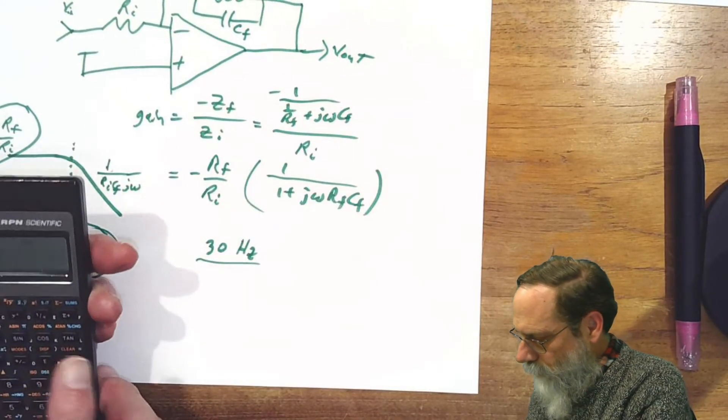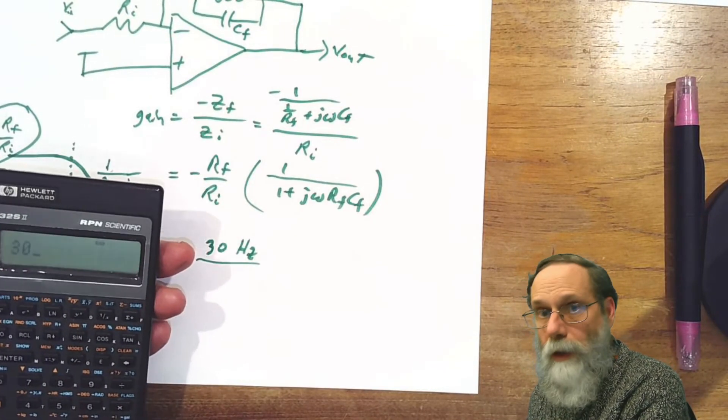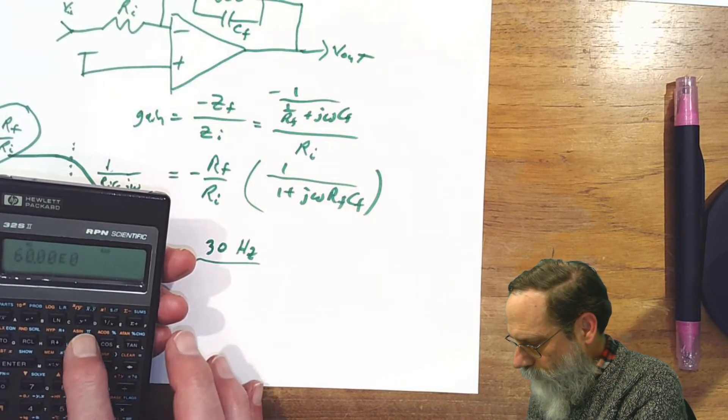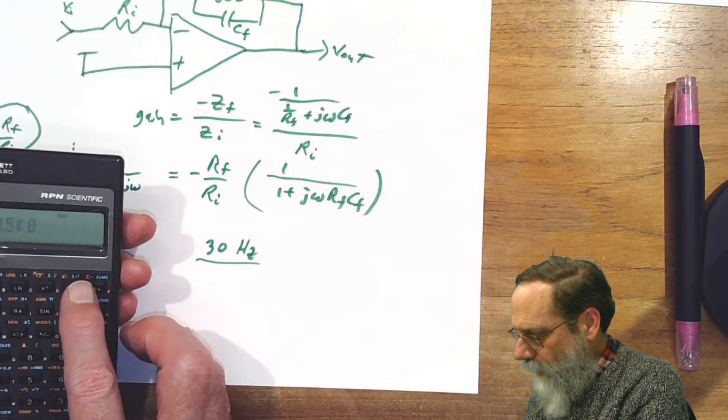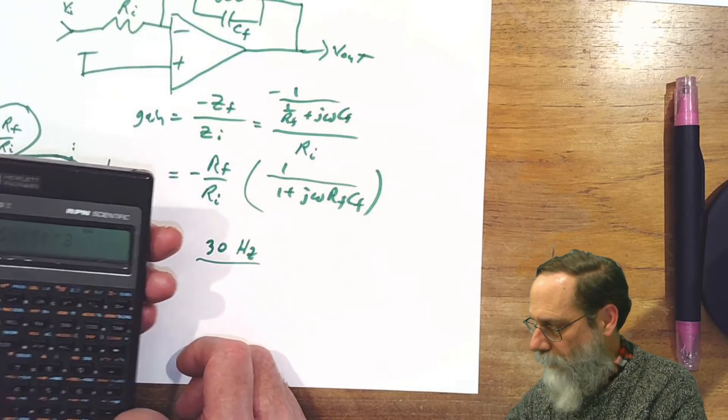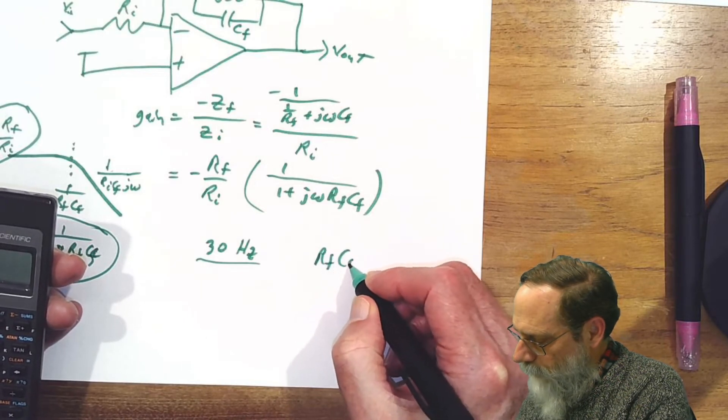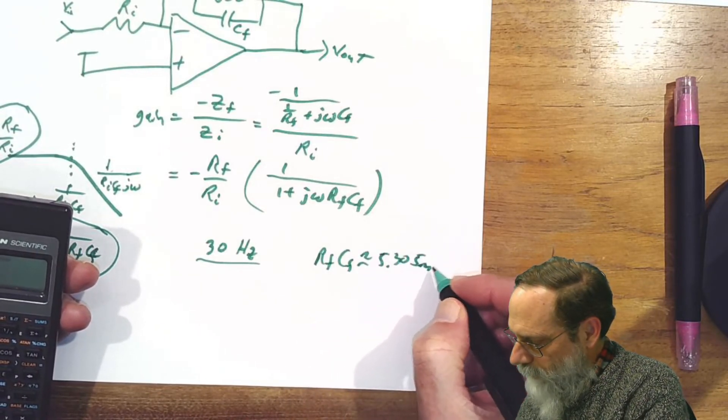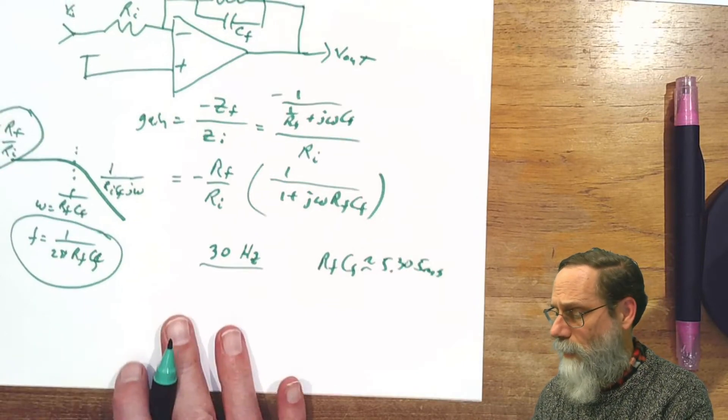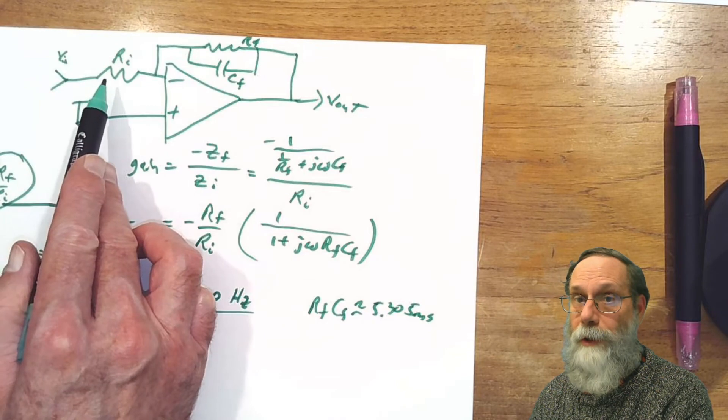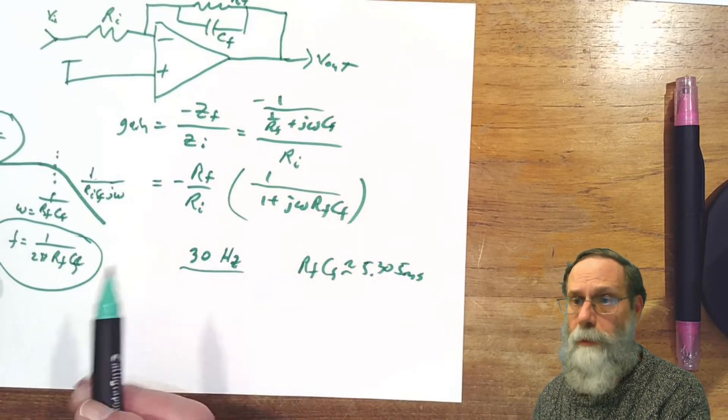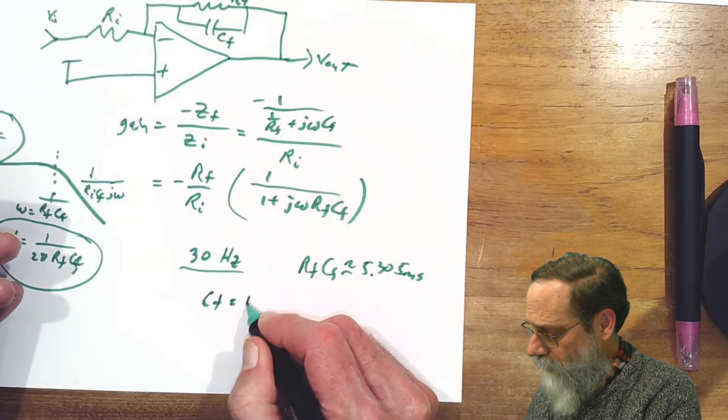30 Hz times 2 pi, then invert that to get the RC time constant. I get 5.3 milliseconds. So Rf Cf is about 5.305 milliseconds. Now, we can pick R and C separately. Because we wanted a pretty big gain, we're going to need a pretty large value for Rf, because it's got to be a lot bigger than Ri. Cf will have to be pretty small. Let's try Cf is 10 nanofarads.